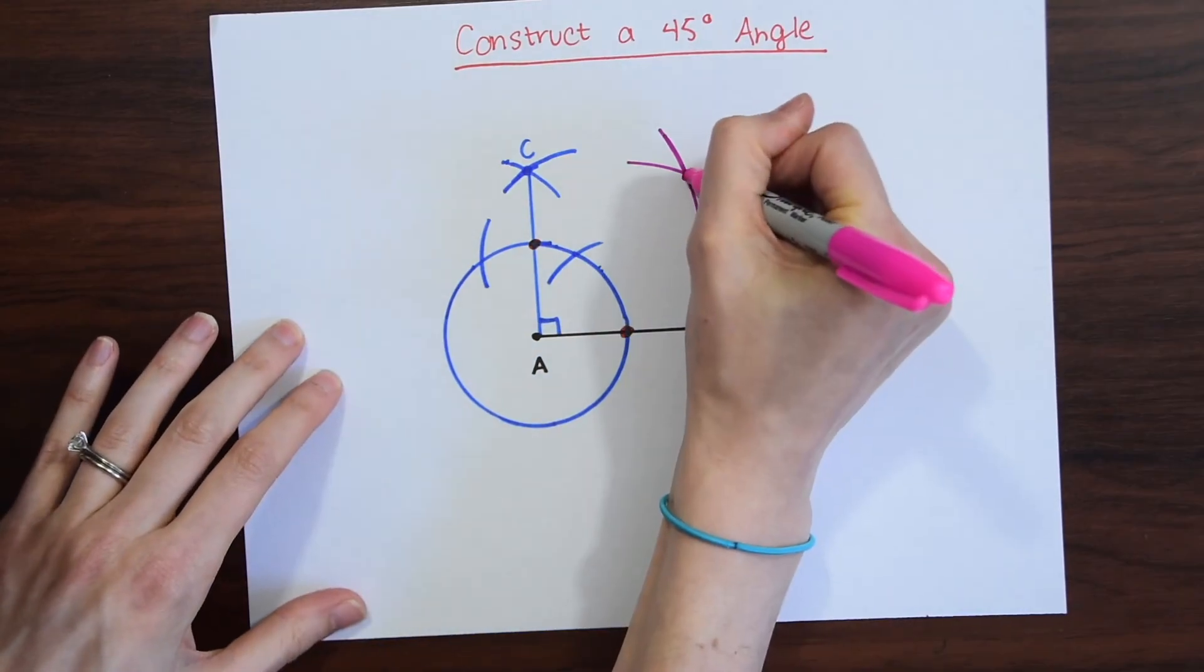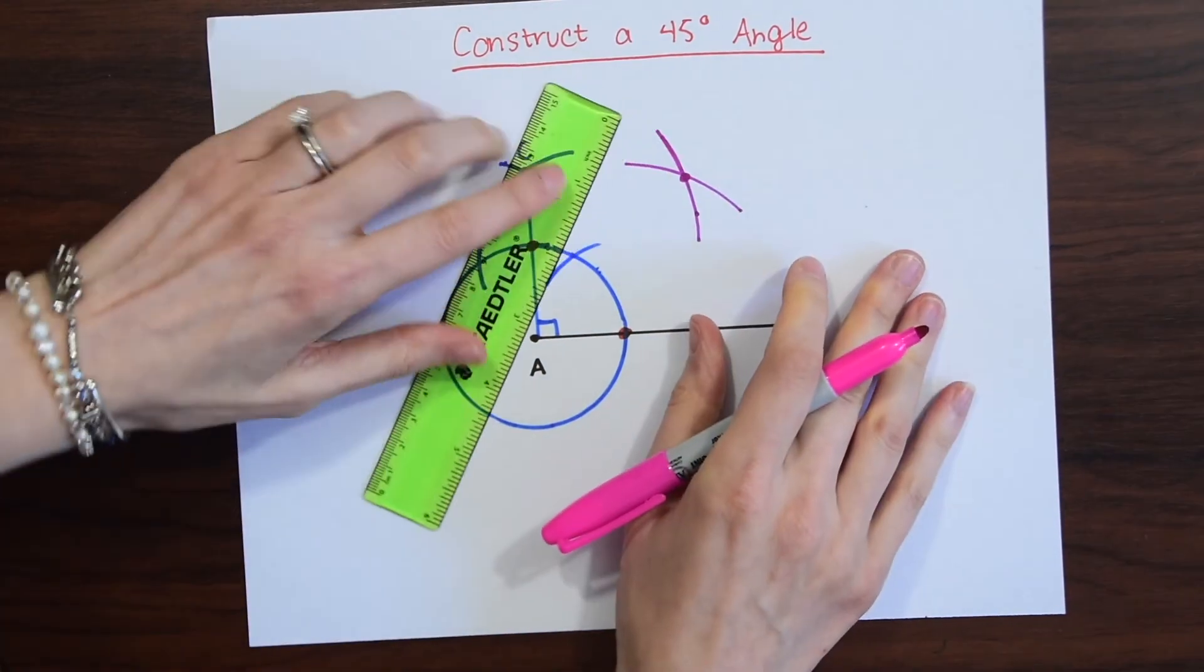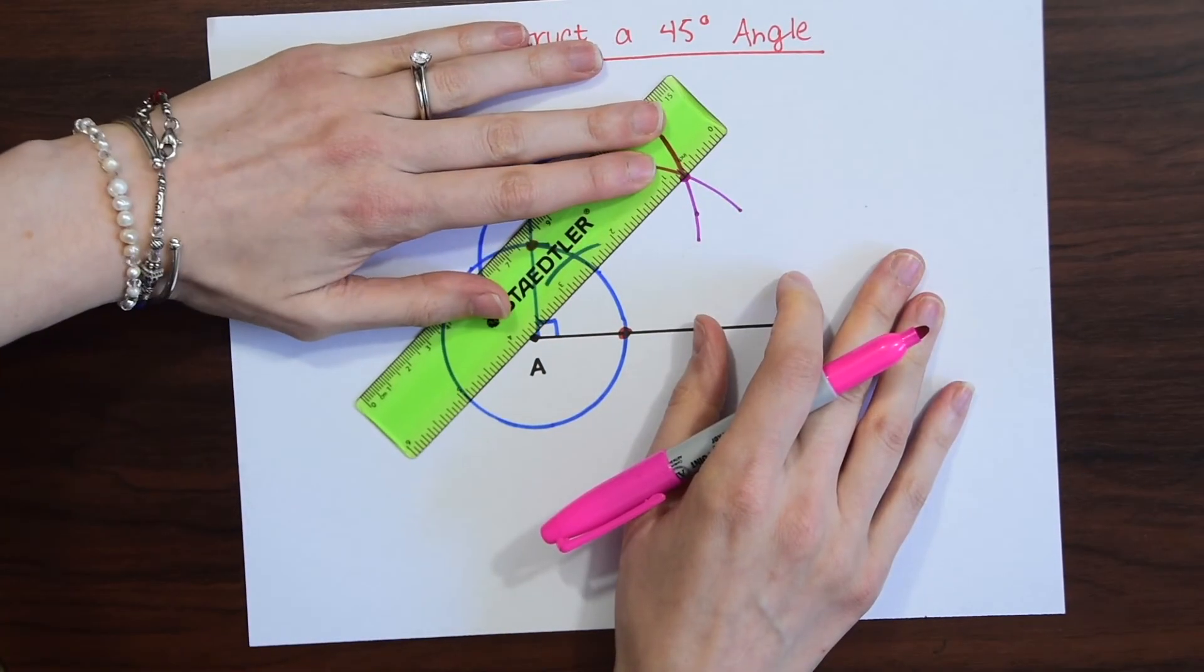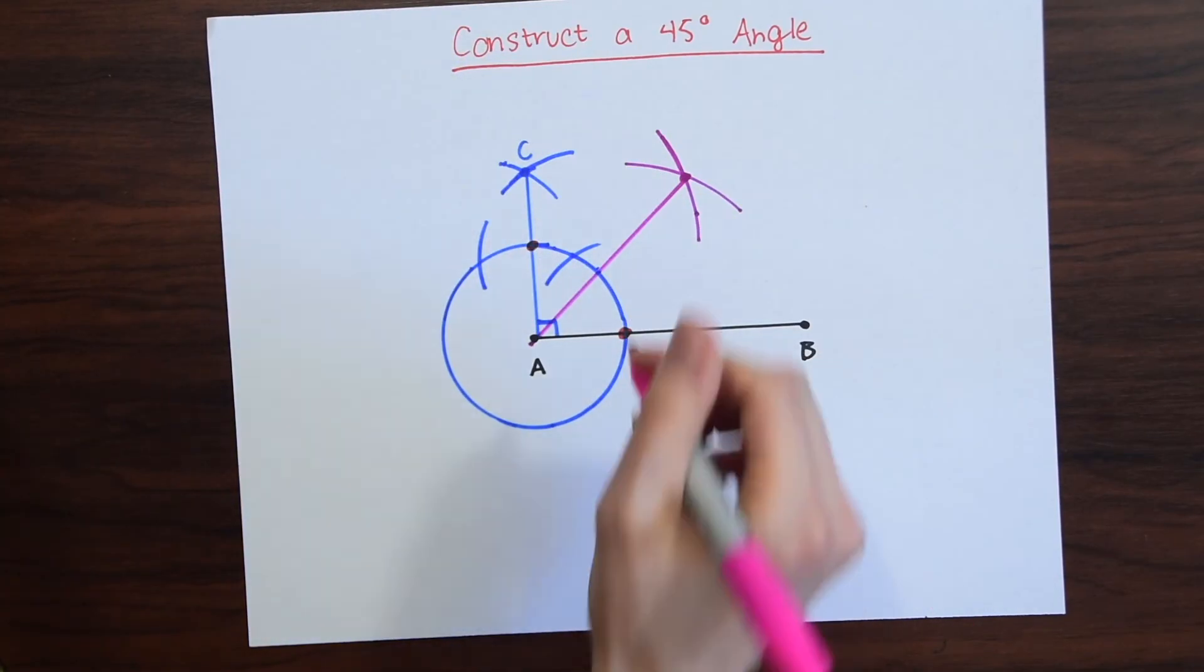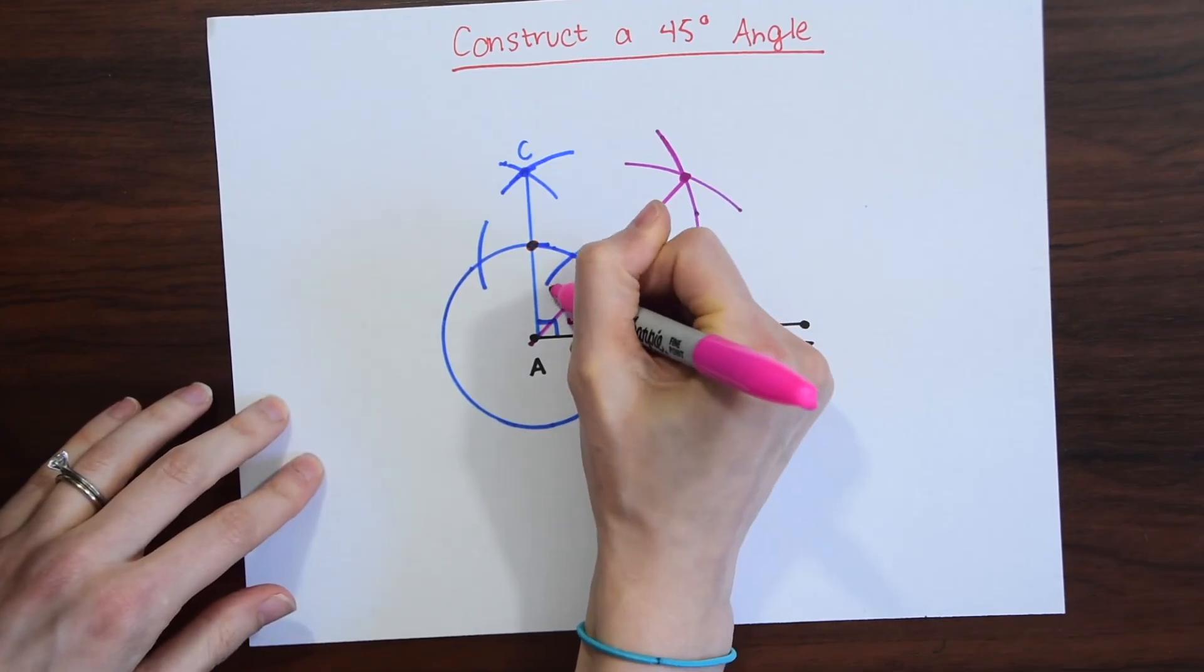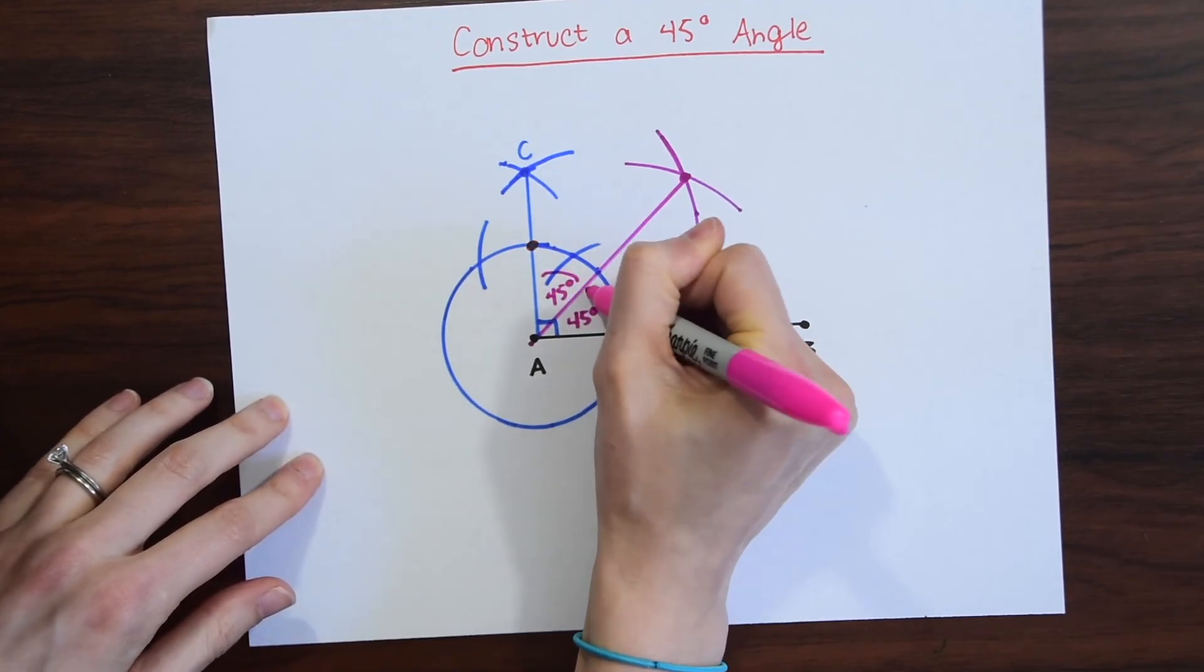Once again I'm just going to put a little dot and now we're going to connect this new intersection to our point A. And notice now we made two 45 degree angles over here and over here.